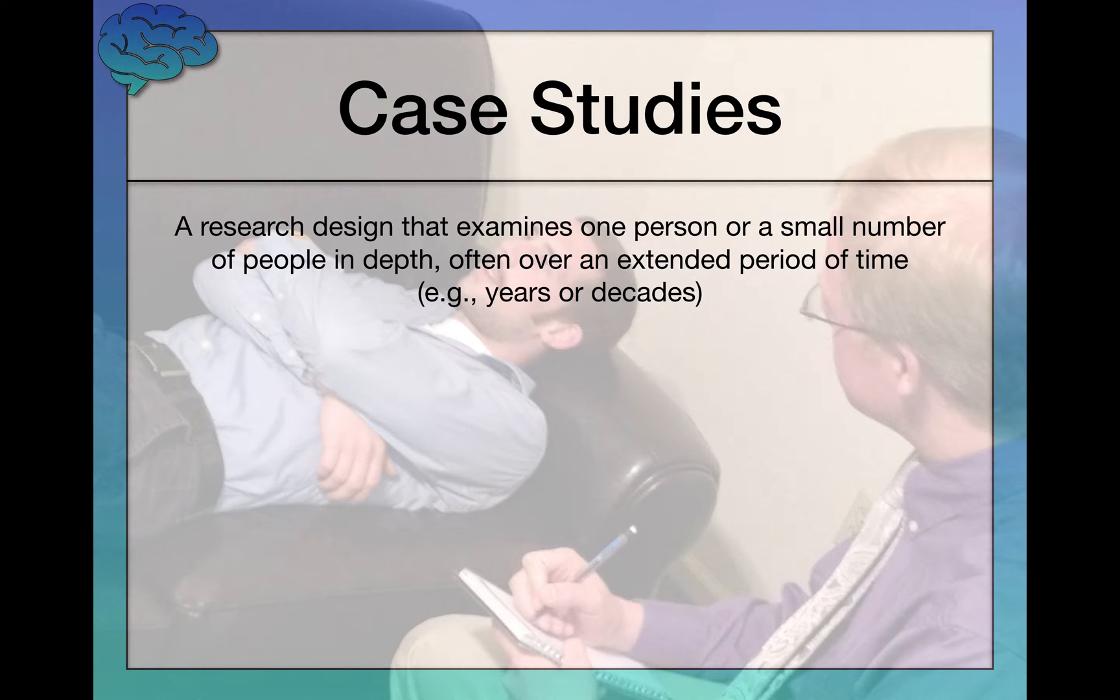And there are a lot of really famous case studies. We're going to learn about some of them in this video series. For example, there's people who have had half their brains removed, and then they've been involved in case studies over many decades where researchers and scientists have tried to figure out what sorts of effects does it have to remove half of someone's brain?